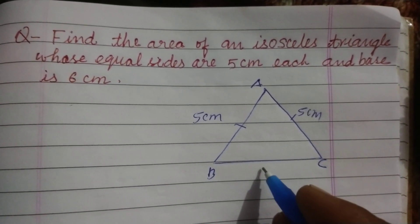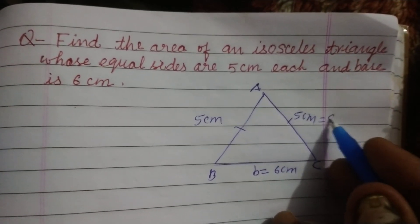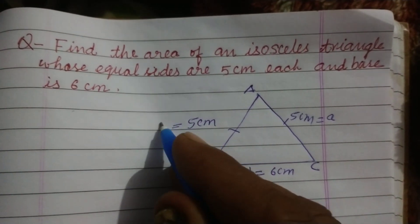While base B is given 6 cm, let these sides be A and A.